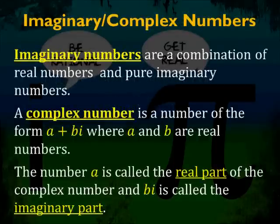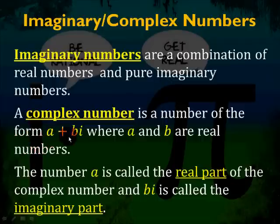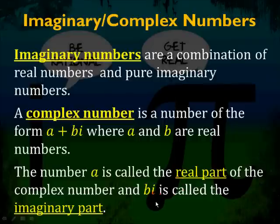Here are some definitions. Imaginary numbers are a combination of real numbers and pure imaginary numbers. Recall that in 6-7, pure imaginary numbers were numbers with the number i in it and some coefficient of i. A complex number is a number of the form a plus bi, where a and b are real numbers. The number a is called the real part of the complex number, and bi is called the imaginary part. So you're basically going to have a complex number where you're adding a real number plus a pure imaginary number.